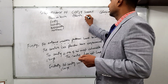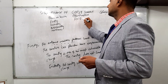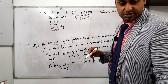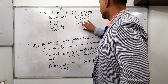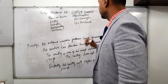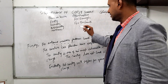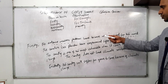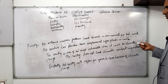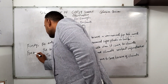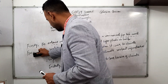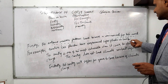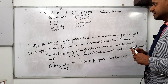Apart from item in series, the second cohesive device is illustration. For illustration we use: for example, for instance, to exemplify, to illustrate, or namely. So after the first sentence, I can write: 'Firstly, the extreme weather conditions have become a new normal for the world. For example, countries like Pakistan have experienced super floods in 2022.' That applies the illustration cohesive device.